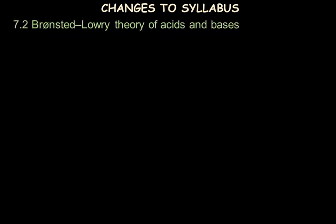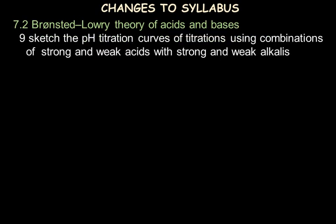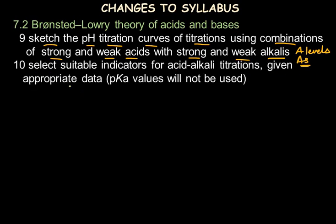A next minor change is made in the topic of Brønsted-Lowry theory of acids and bases, which now says to sketch the pH titration curves of titrations using combinations of strong and weak acids with strong and weak alkalis. Earlier this topic was in A-level chemistry and now it is shifted to AS-level. A related subtopic says to select a suitable indicator for an acid-alkali titration given appropriate data; pK values will not be used here, but the pH curve allows identification of a suitable indicator.